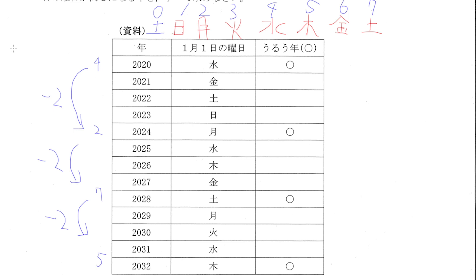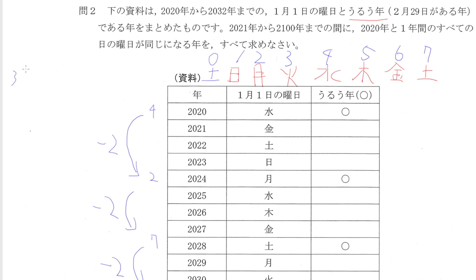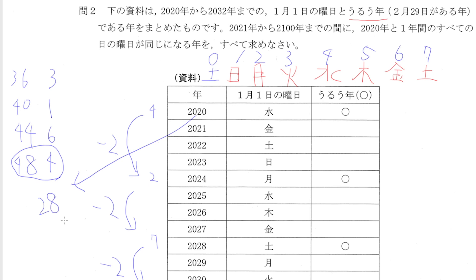Continuing the pattern: 2036 will be 3 (Tuesday), 2040 will be 1 (Sunday), 2044 will be 6 (Friday), and 2048 will be 4 (Wednesday) — the same as 2020. It takes 28 years for this pattern to repeat itself. So the other time in this range with the exact same calendar will be 2048 plus 28, which is 2076. The answers are 2048 and 2076.